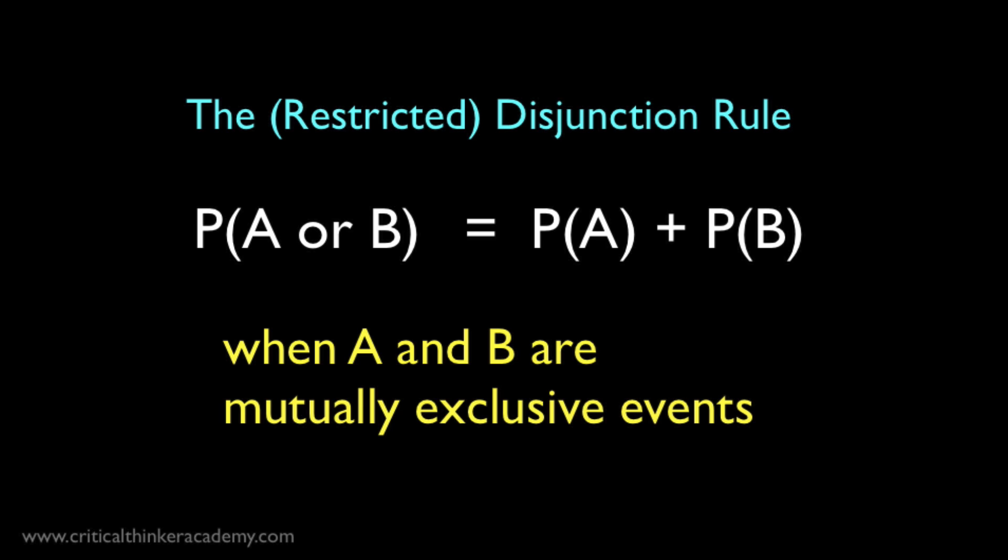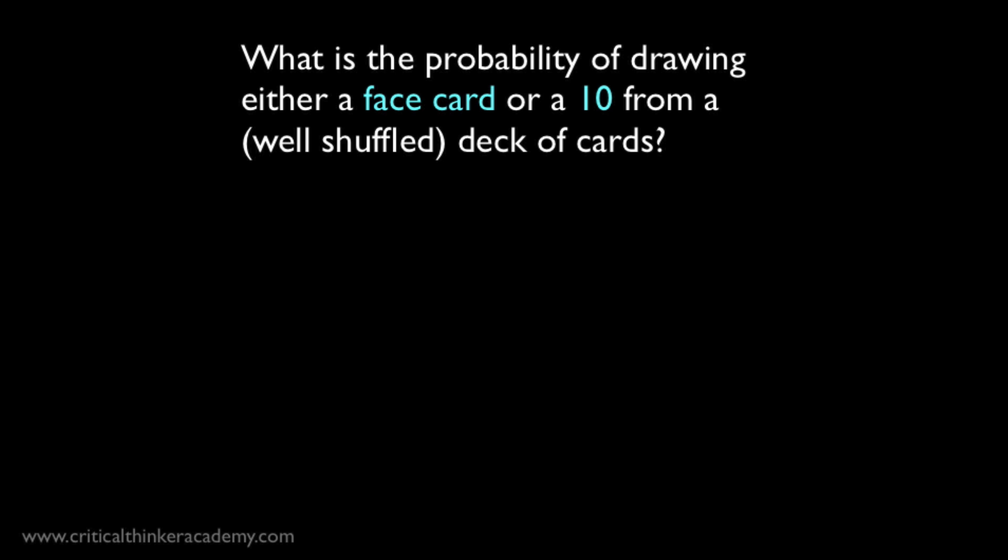Similarly, you can't toss both a head and a tail on a single coin toss. Now, let's look at another example. What is the probability of drawing either a face card or a 10 from a well-shuffled deck of playing cards? First, we'll need to make sure we've identified all the cards. The face cards include jacks, queens, and kings. The 10 is just a 10. So this is a total of four types of cards.